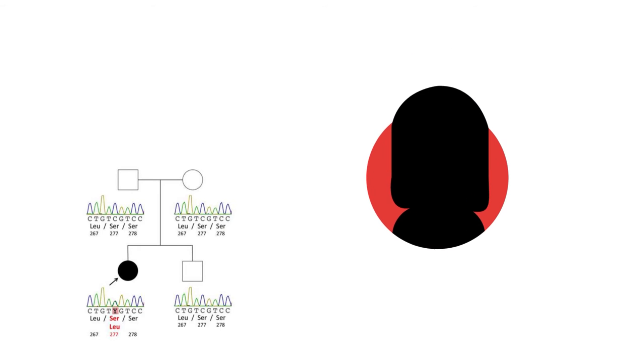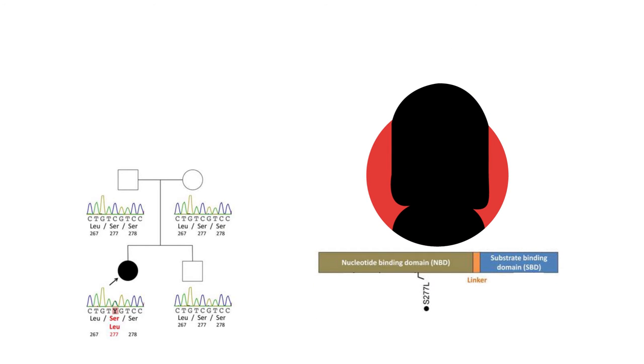They found the girl had a mutation in a critical part of a gene that codes for a heat shock protein, a type of chaperone.